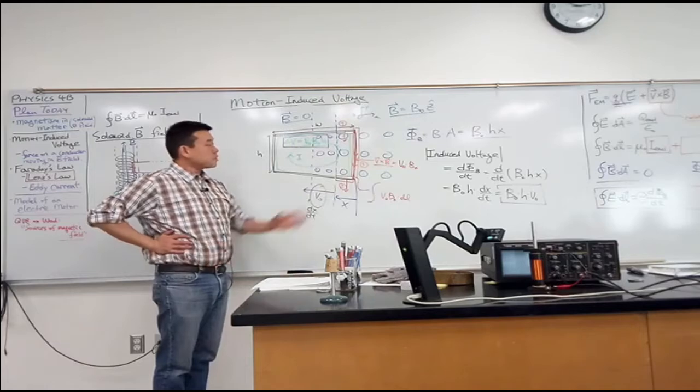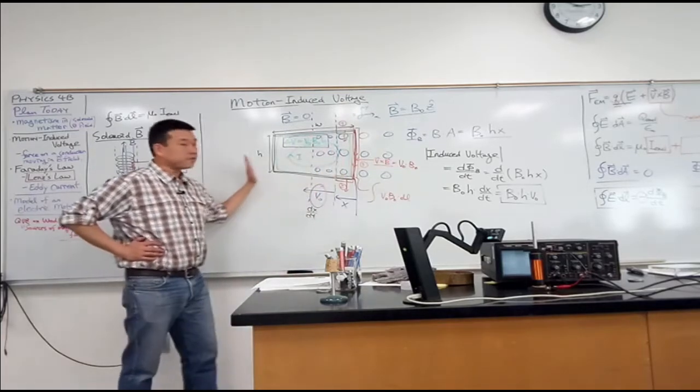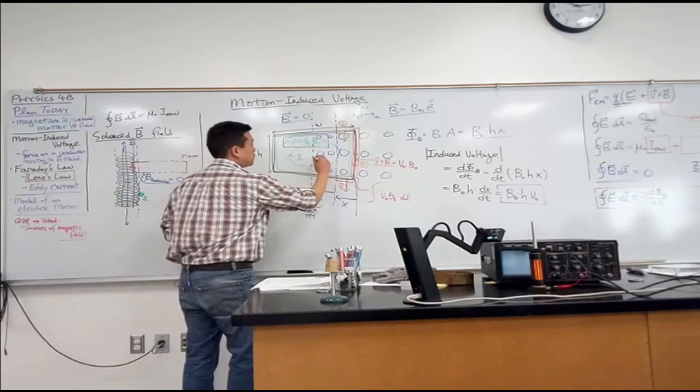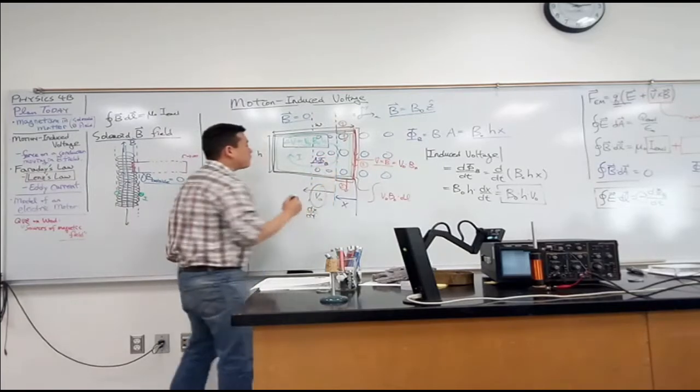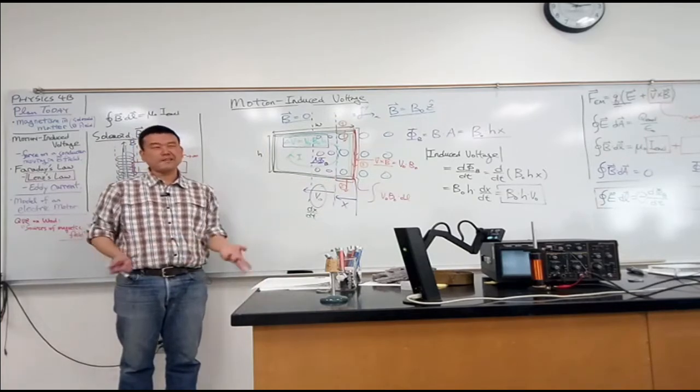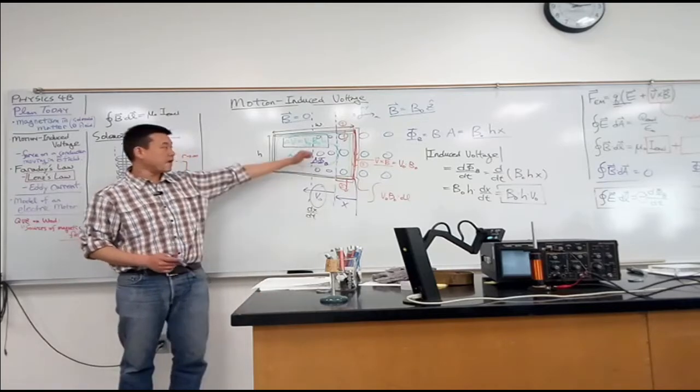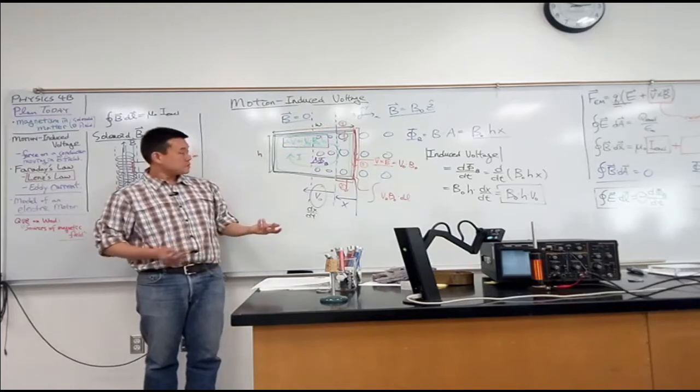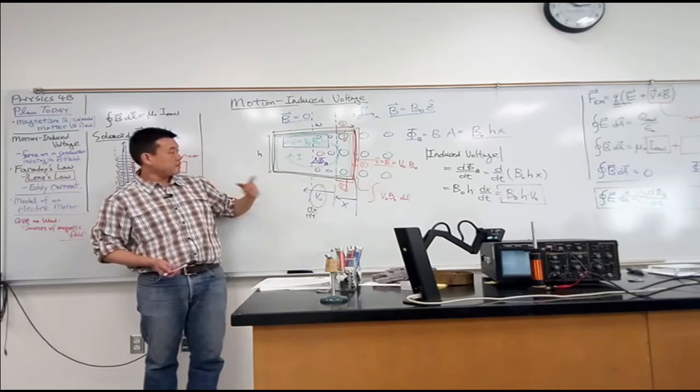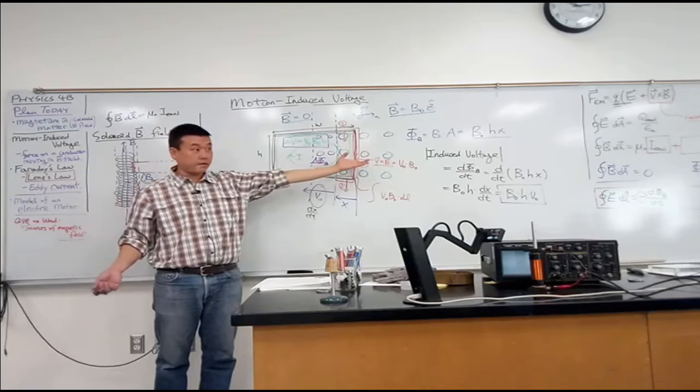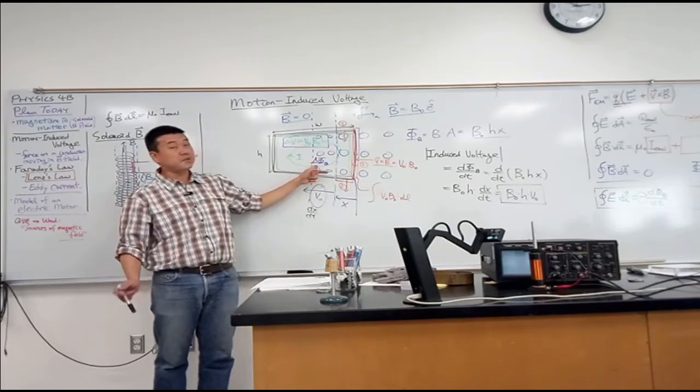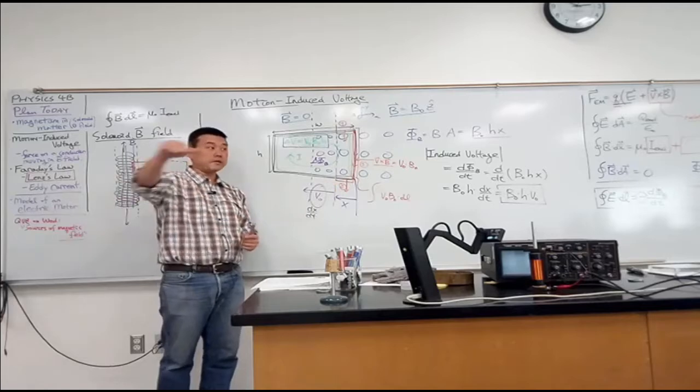So Lenz's law deals with the current. It says that the direction of induced current, that is the current that you would get from the voltage in Faraday's law. It says direction of induced current opposes the change of magnetic flux that induced it. Does the meaning of this clear enough? It's a bit of a complicated sentence. So let me illustrate what I mean here. As this boundary moves to left, when you look at the direction of change of magnetic flux, what direction would you say magnetic flux is changing? Coming out of the board more, right?